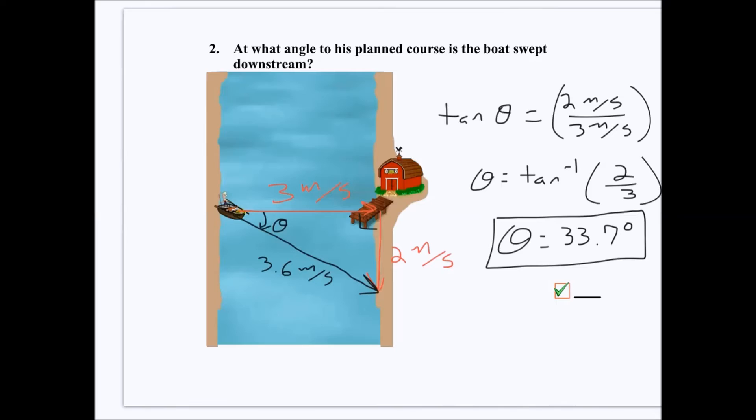Okay, so we set up the trigonometric relationship. We solve for theta. Make sure your calculator is in degree mode and not radian mode when you do this. Otherwise, your answer will look like a negative or something less than 1, and you don't want that.